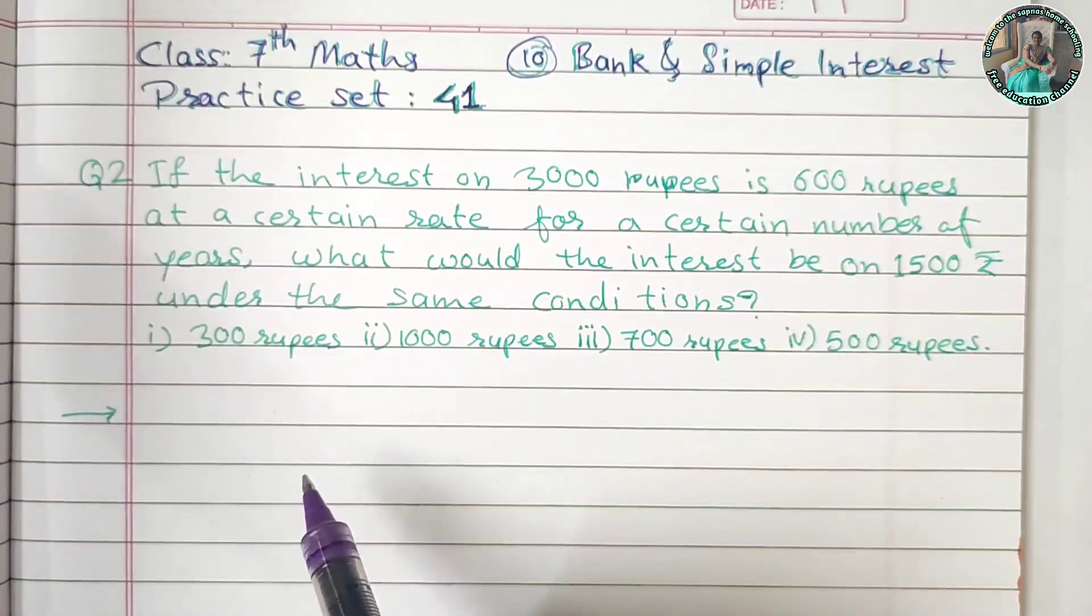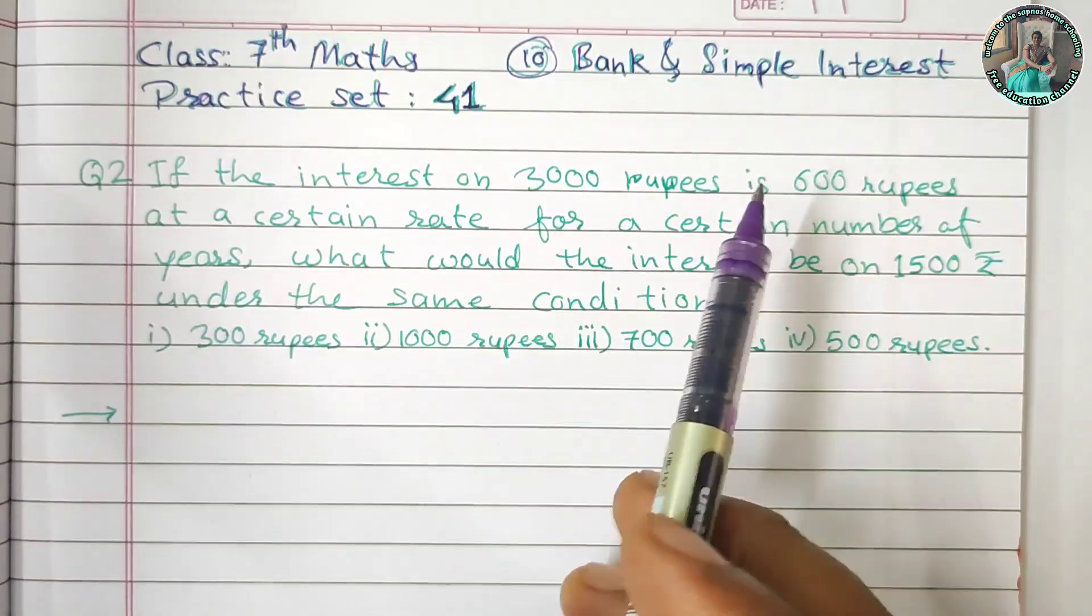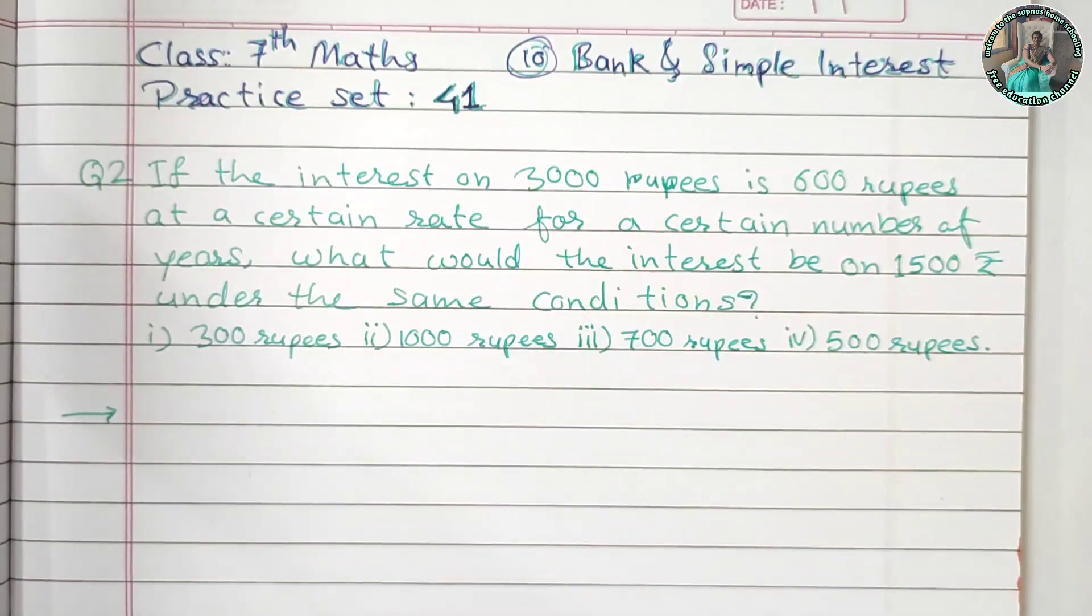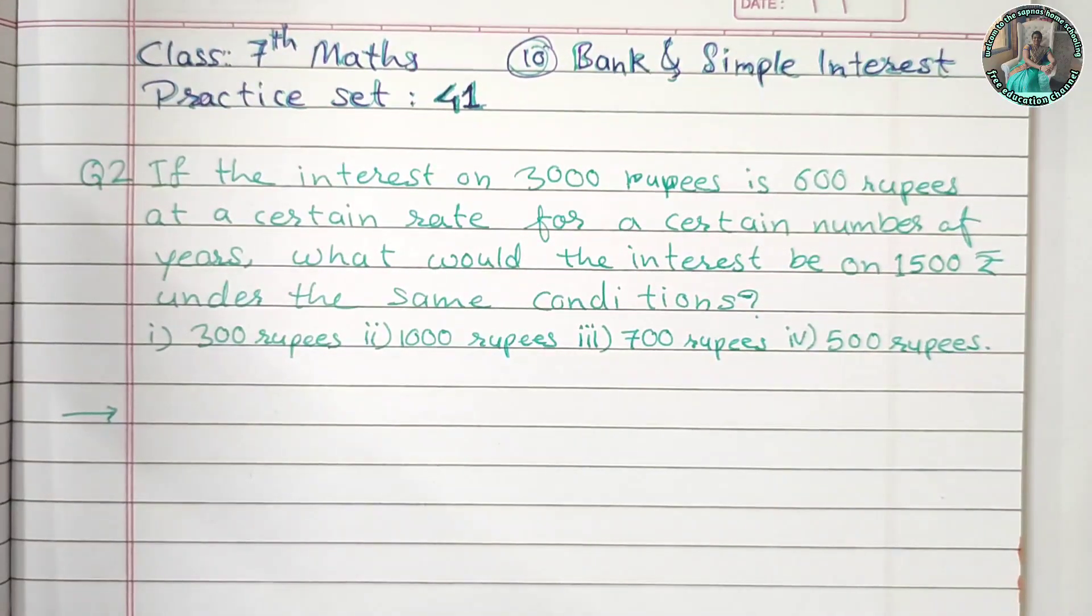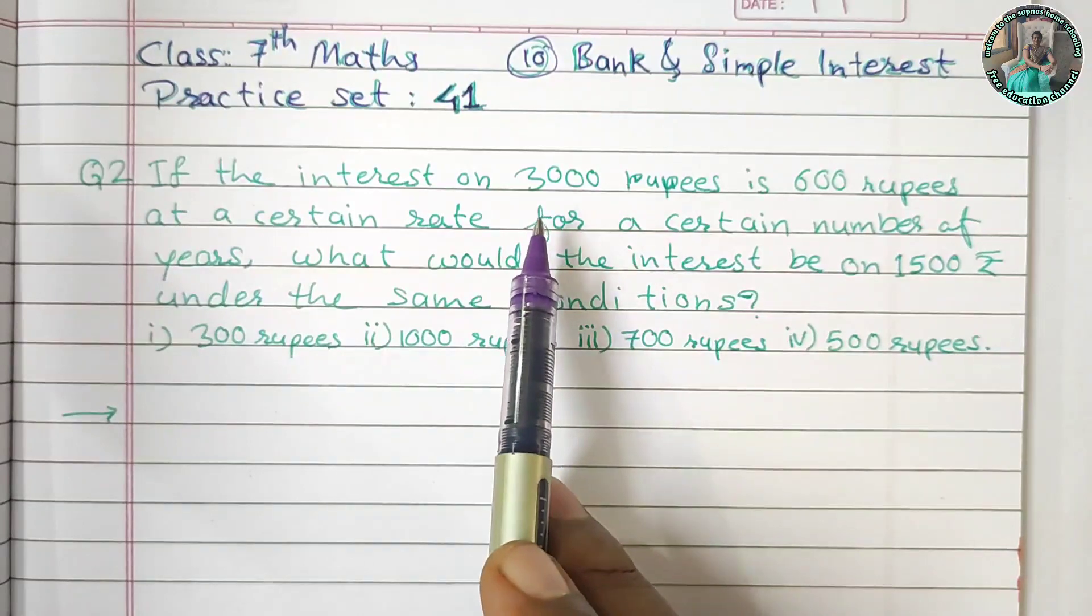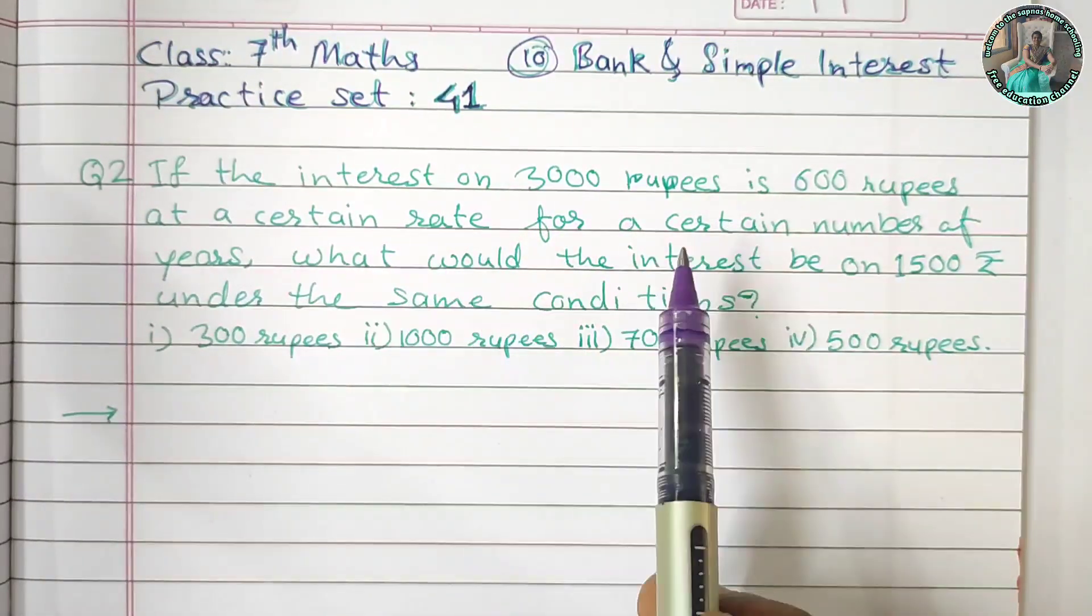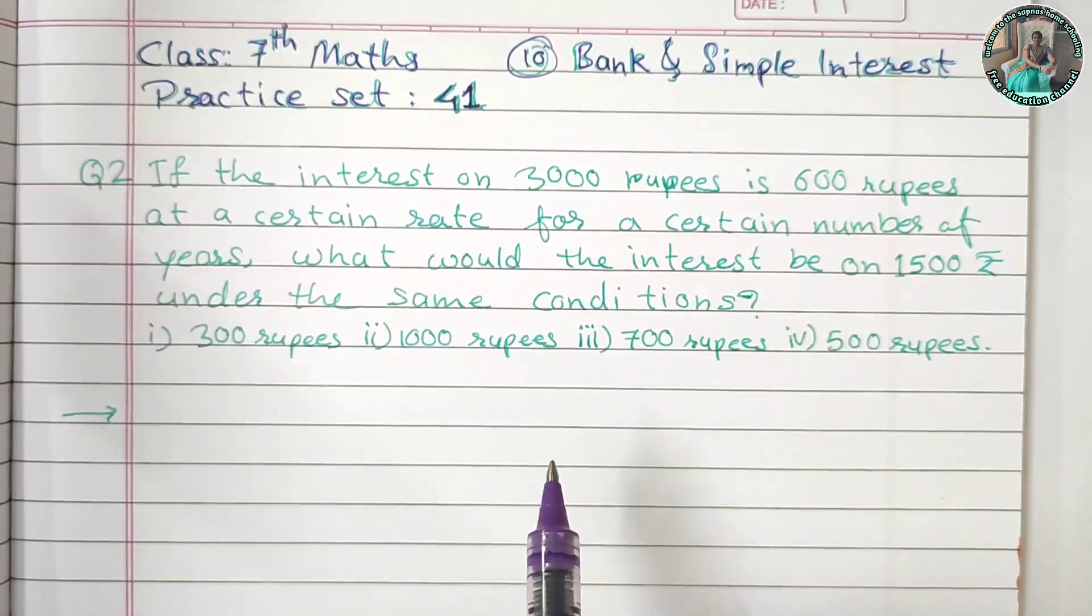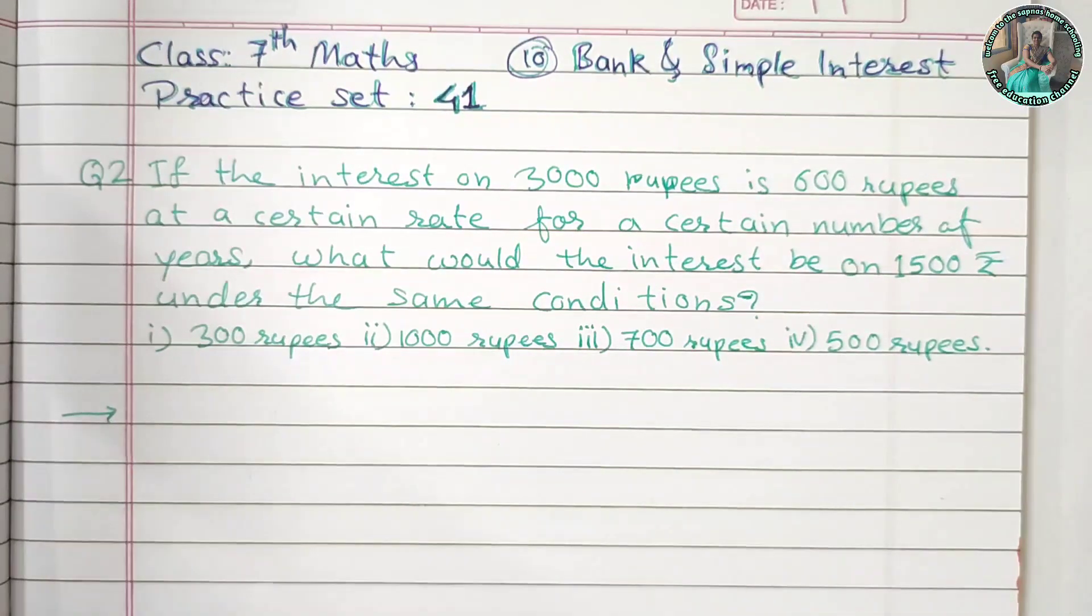I am using the ratio and proportion method because the principal and interest have the same ratio. When the principal amount increases, interest increases. When principal decreases, interest decreases. So this proportion is a direct proportion.